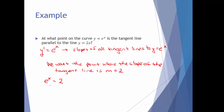We need to solve e to the x equals 2 for x. You can either take the natural log of both sides to get x out of the exponent, or change from exponential form to logarithmic form. Either way, you get that the log base e — also known as the natural log — of 2 equals x.